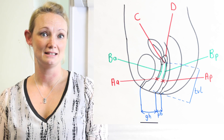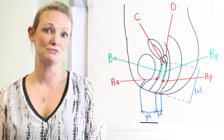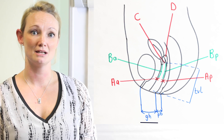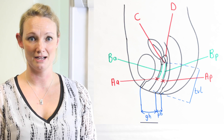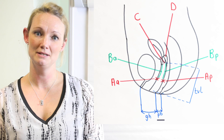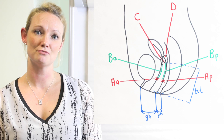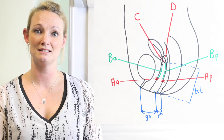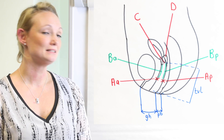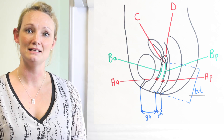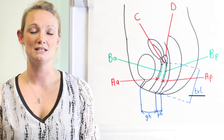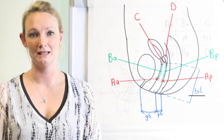GH stands for genital hiatus and is measured from the middle of the external urethral meatus to the midline of the posterior hymen. PB is the perineal body and is measured from the posterior portion of the genital hiatus to the middle of the anus. TVL is the total vaginal length, measured when point C or D are in their normal place.